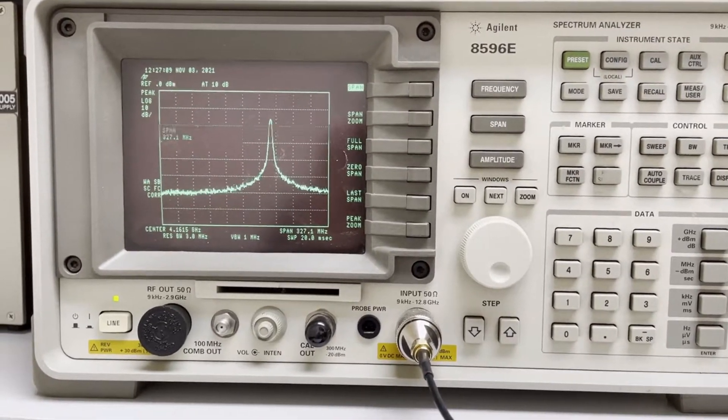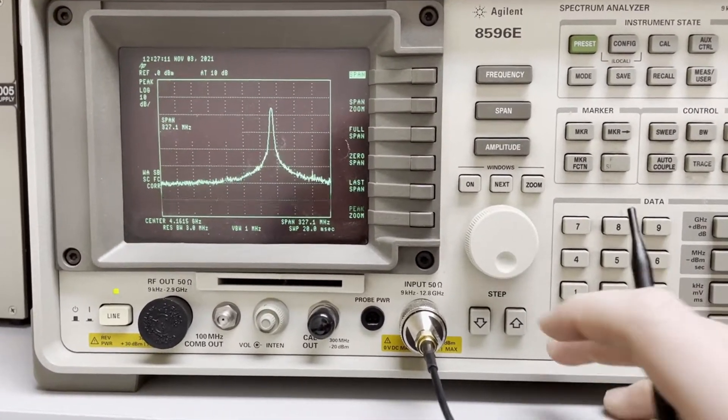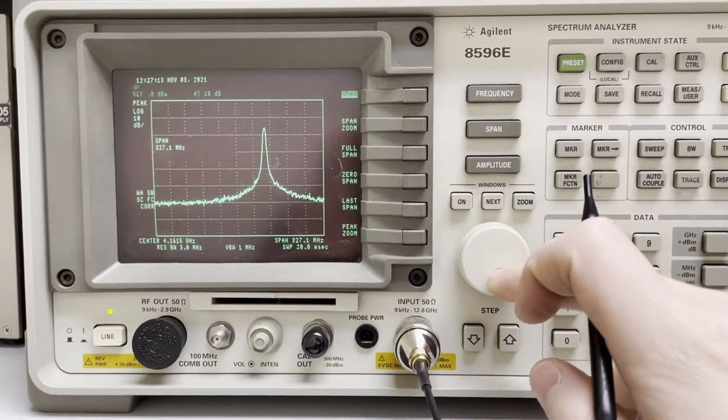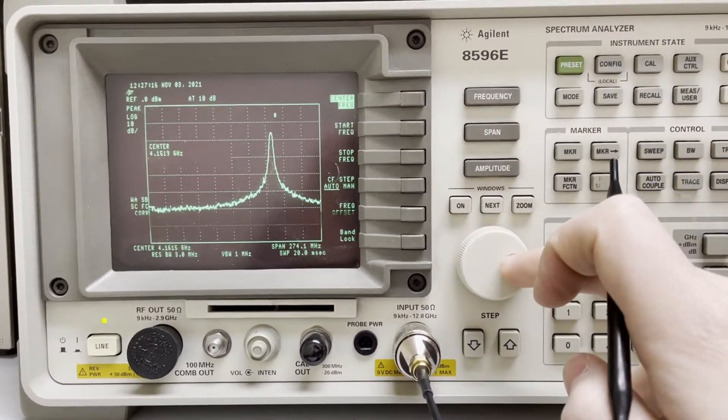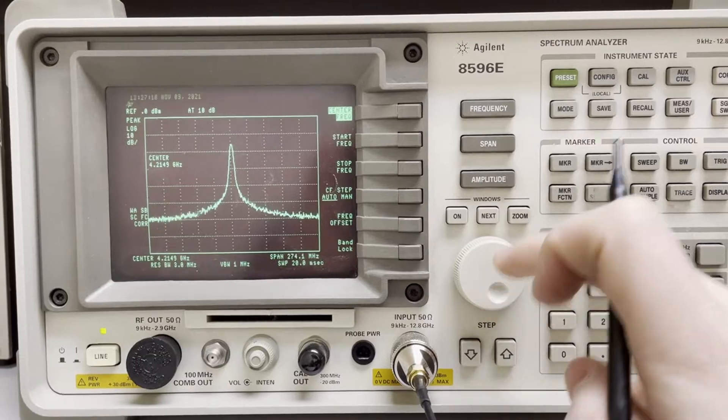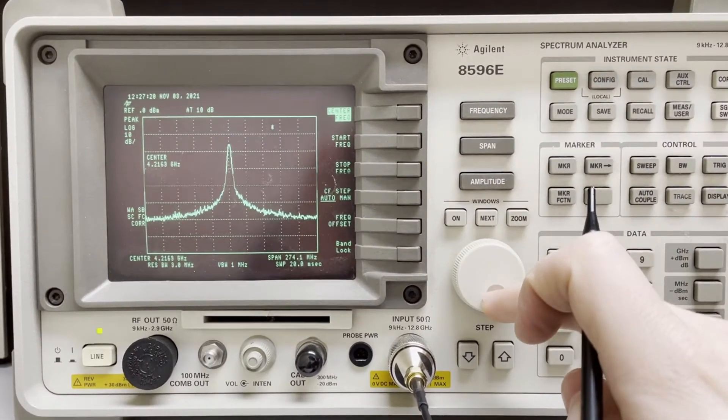First of all, you can see that our beat note looks a lot better than it did before. And we'll see real quick if we can get the offset lock into an offset phase lock by adjusting the gain.